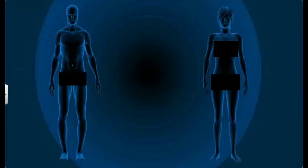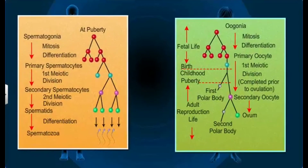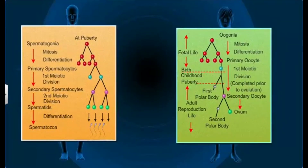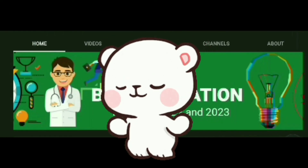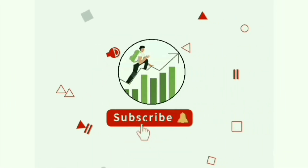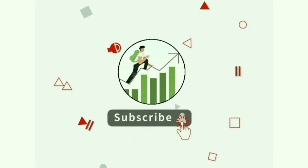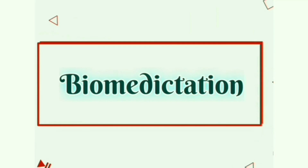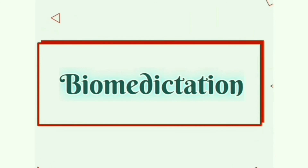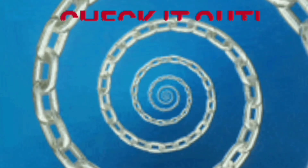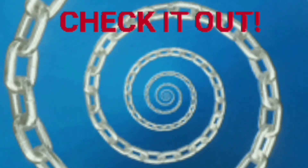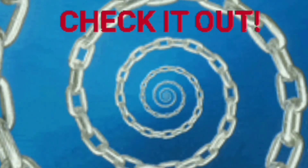In this way, the ovum and sperm are formed through a long and intricate process of gametogenesis. Congratulations — you have completed a major portion of Human Reproduction. Make sure you like, share, and subscribe, and comment the topic you want our next video on. Thanks for watching, bye bye!